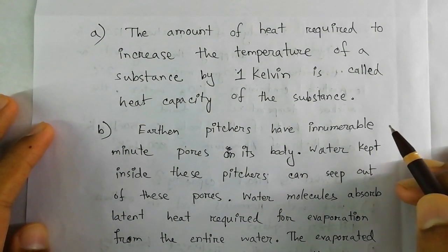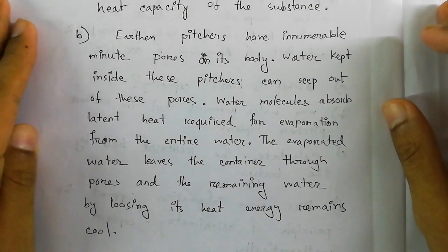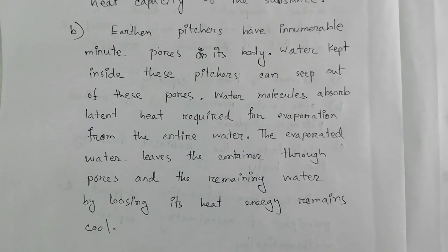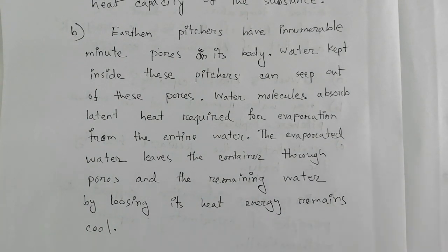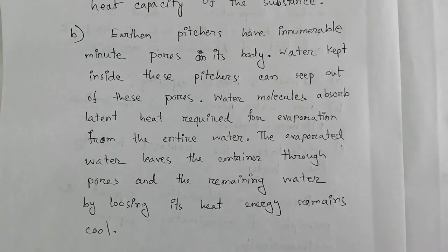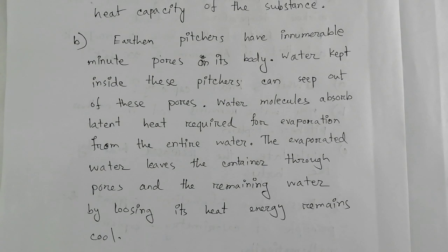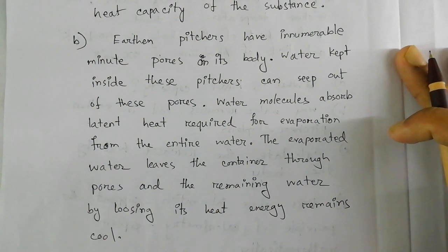The next question is: in earthen pitchers, why does water remain cool? The answer is now on screen. In earthen pitchers there are innumerable tiny pores in the body of the pot. Since it is made of earth, water kept in it tries to seep out through these small pores. To do so, the water molecules need to vaporize first, so they take this energy from the entire water in the container. As evaporation occurs from these minute pores, the remaining water inside the pitcher loses heat energy and remains cool.